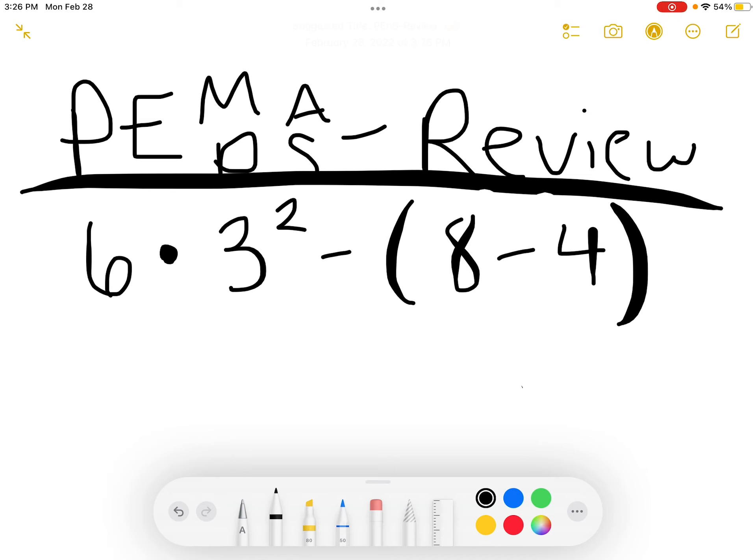In this example, we're going to want to start with our P for parentheses. And I see that we have parentheses. We have one step inside of them. So I'm going to underline that step. 8 minus 4 gives us 4. Write that answer and drop down the rest of the problem in the exact order that it appeared above.